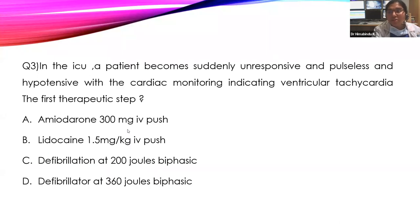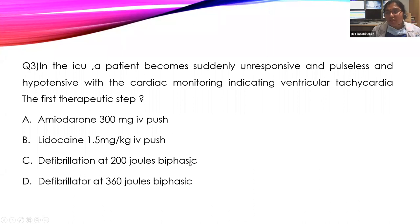MCQ 3: In the ICU, a patient becomes suddenly unresponsive, pulseless, and hypotensive with the cardiac monitor indicating ventricular tachycardia. What is the first therapeutic step? Options: A — amiodarone 300 mg IV push; B — lidocaine 1.5 mg/kg IV push; C — defibrillation at 200 J biphasic; D — defibrillation at 360 J biphasic. The scenario is pulseless VT — the answer is C, defibrillation at 200 J biphasic (360 J is for monophasic).